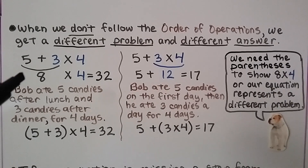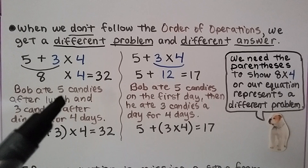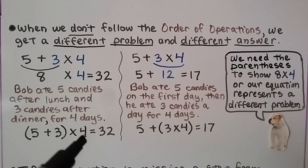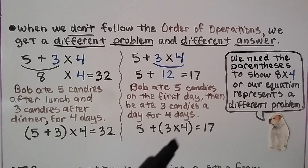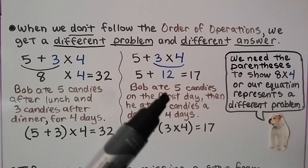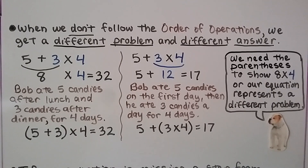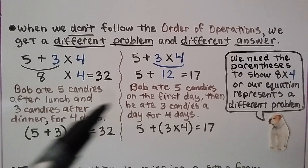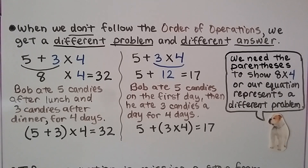We need parentheses to show 8 times 4. If parentheses are around 5 plus 3, we know we're adding to get 8, then multiplying by 4 days to equal 32. If parentheses are around 3 times 4, we know to multiply 3 times 4 first. For homework, follow the order of operations. When writing an equation for a word problem, use parentheses to indicate which operation to do first.